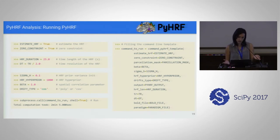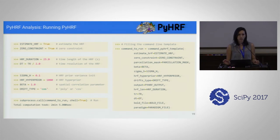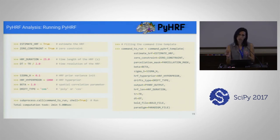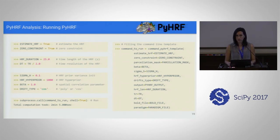First, estimate HRF should be set to true if you want to estimate it — you can also skip this. The zero constraint means we constrain the first and last point of the HRF to be zero, which is recommended. HRF duration is usually 25 seconds. The time resolution of the HRF — we recommend using TR divided by two, where TR is the time between two time points of our BOLD signal, but you can change it. Using a very low time resolution means many more parameters and higher computational cost.